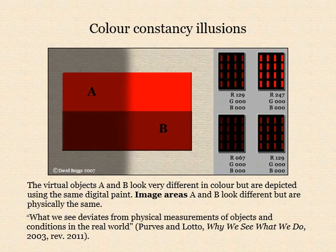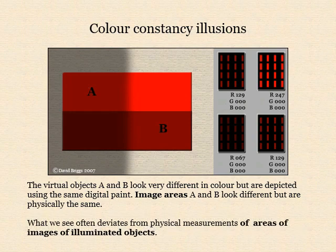It's very likely that sometimes we will paint different coloured objects under different illumination using the same paint. The surprising thing — the thing that qualifies these demonstrations as illusions — is that these image areas look different but are physically the same. From this corrected statement, we are only justified in making a much less general assertion: what we see often deviates from physical measurements of areas of images of illuminated objects. Overall, when we examine objects freely in daylight, our visual system is remarkably good at representing each object as having a relatively stable object colour that is a very good indication of the general character of the spectral reflectance.